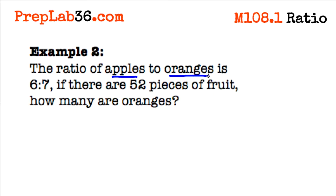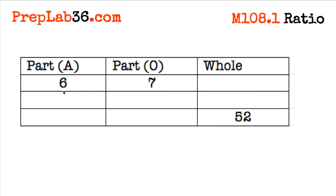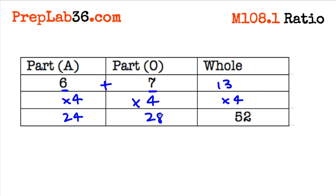One more example. The ratio of apples to oranges is 6 to 7. If there are 52 pieces of fruit, how many are oranges? Set up the ratio box and solve for oranges. We put in 6 and 7, add them together to get 13. There are 52 total, so 52 divided by 13 is 4 — the multiplier. 6 times 4 is 24, 7 times 4 is 28, and 24 plus 28 equals 52. There are 28 oranges. And that's my favorite lesson — 108 Ratios.